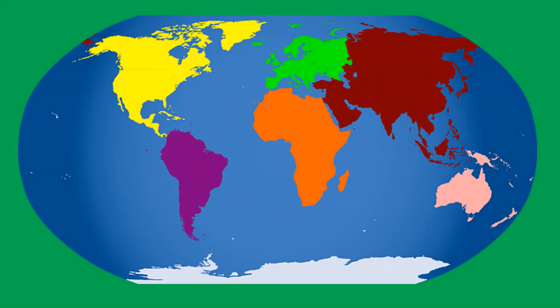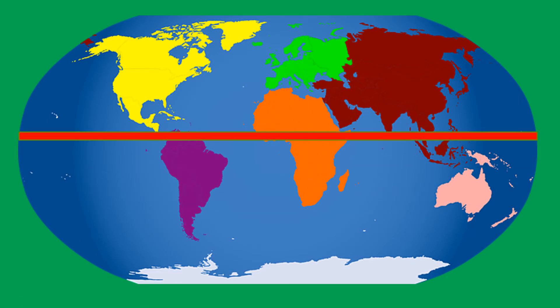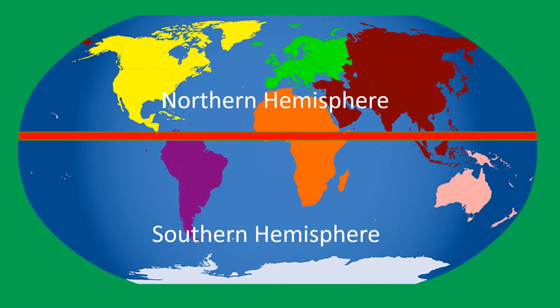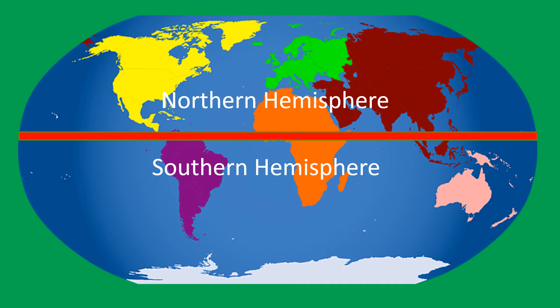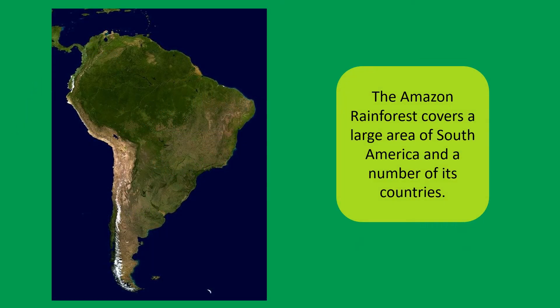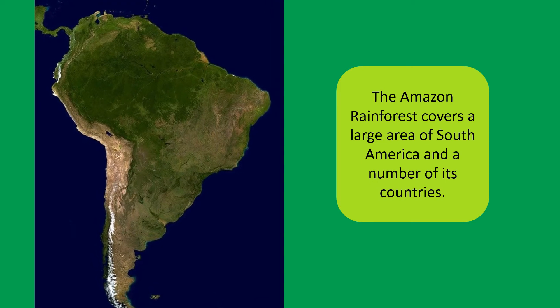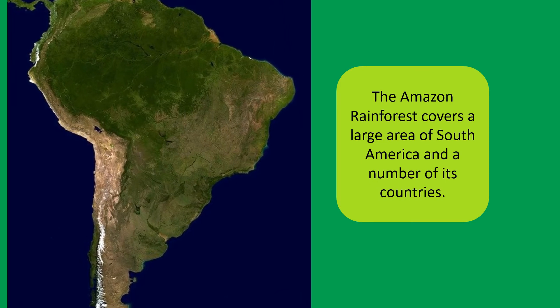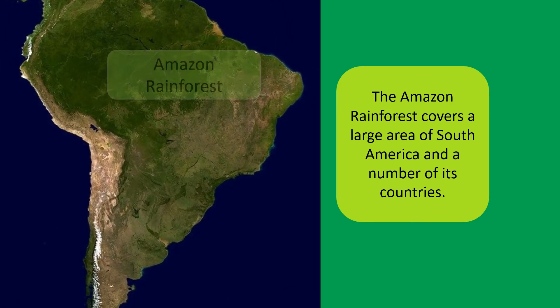The equator is an invisible line dividing the northern hemisphere from the southern hemisphere. The equator runs through South America and through the Amazon rainforest. The Amazon rainforest covers a large area of South America and a number of its countries.